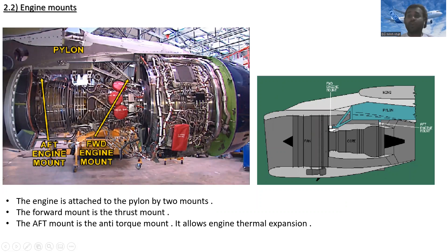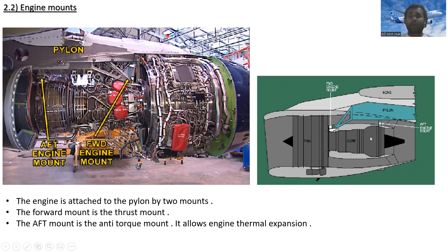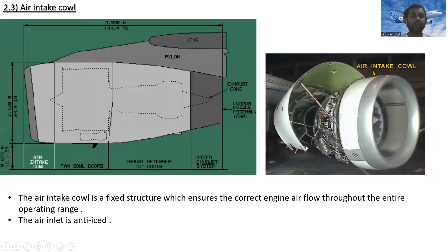Looking at the engine mounts: there are two mounts — the forward mount and the aft mount. The engine is attached to the pylon by these two mounts. The forward mount is called the thrust mount. The aft mount is called the anti-torque mount, and it allows for engine thermal expansion.